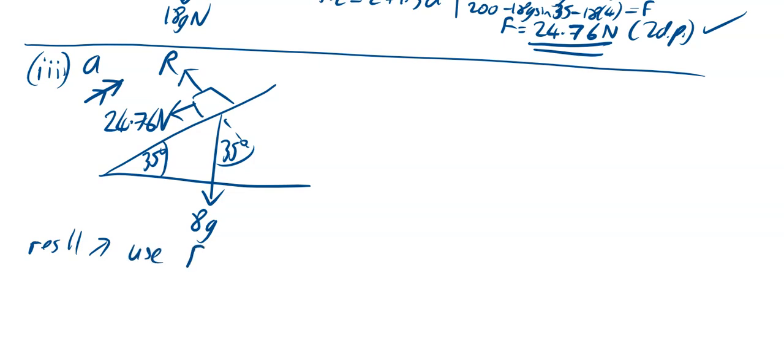So first thing we want to do is we're going to resolve parallel to your plane going upwards. And we're going to use, and I'm going to say F equals MA. I can say F because F isn't mentioned now in my question. So going up a plane, I actually don't have any forces going up a plane, so I've got minus 24.76 going down a plane. And then minus my 18G sine 35, and that's equal to my mass, which is 18, times my acceleration, which we don't know.